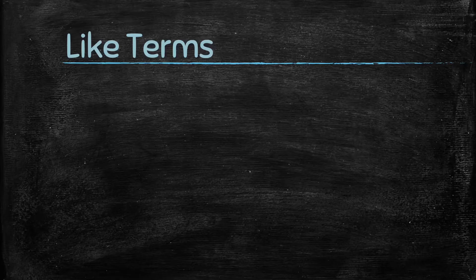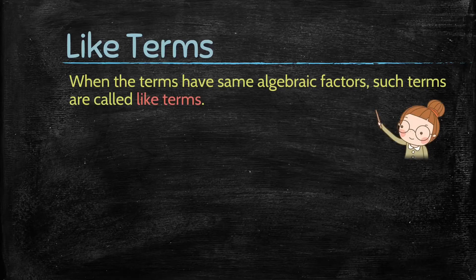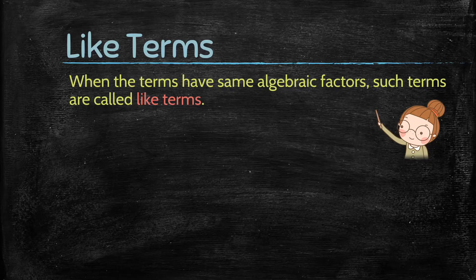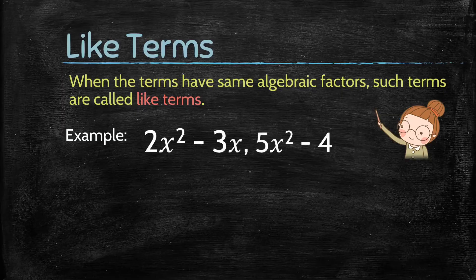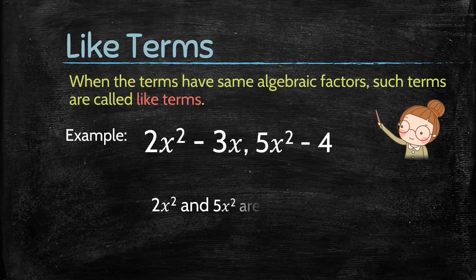Now let's understand what are like terms, which are very important to add or subtract algebraic expressions. When terms have the same algebraic factors, such terms are called like terms. For example, 2x and 3x are like terms because they have the same algebraic factors.